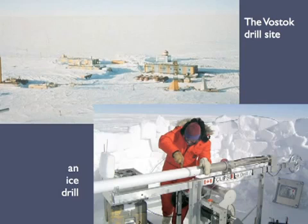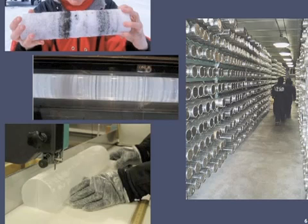Obtaining ice cores is logistically challenging and impressive. All these structures and gear are flown in and set up by scientists and technicians. Cores are drilled, pulled out, and sawn into manageable lengths. At the end of the expedition, they're flown back to a cryolab, where they're stored in freezing temperatures and made available to researchers. The samples show the natural layers in ice. The black layers probably contain volcanic ash from ancient eruptions, and the shades of gray probably reflect yearly or seasonal variations.